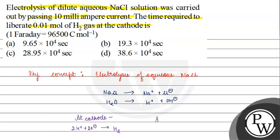And at anode, we have chloride ion which will get oxidized. 2Cl⁻ → Cl₂ + 2e⁻.